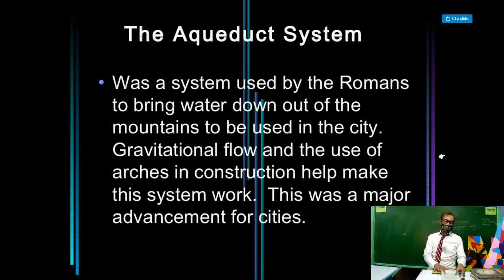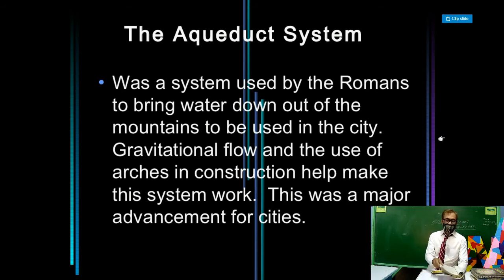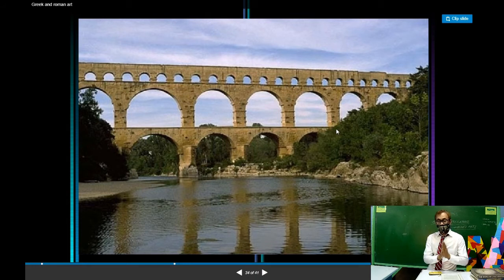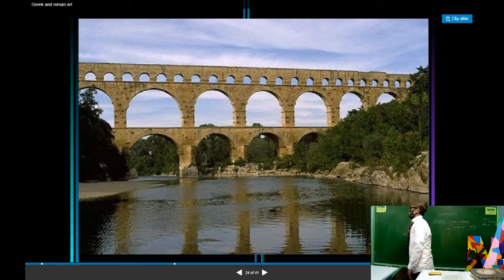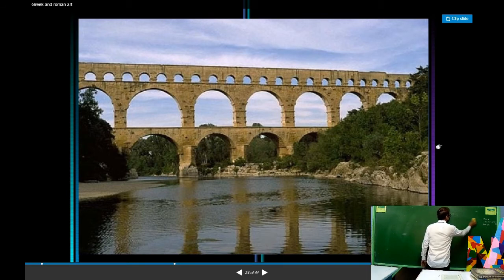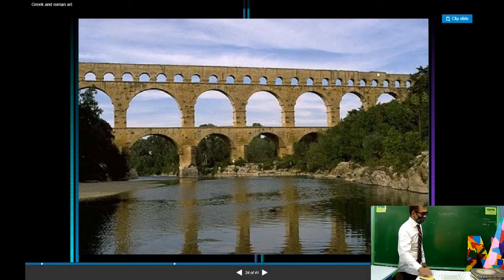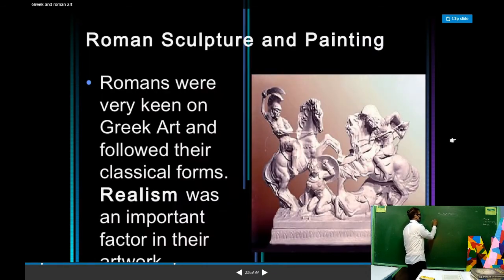The aqueduct system was a marvel of Roman engineering. They served as dams that supplied water to the city using gravity to make the water flow from the mountains. The construction uses arcs — a series of arcs called an arcade, with smaller arcs on top and larger diameter arcs on the lower portion, carrying water from the mountains to the city.